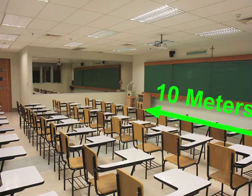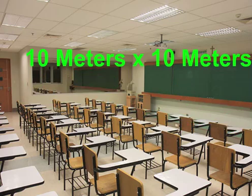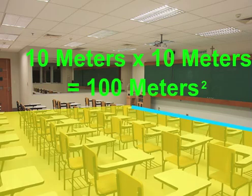Measuring area. If the floor of your classroom was 10 meters long and 10 meters wide, we could find the area. 10 meters times 10 meters equals 100 meters squared. The floor is a two-dimensional space, so the meters are squared.